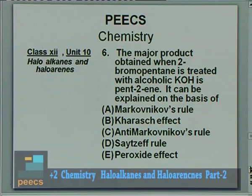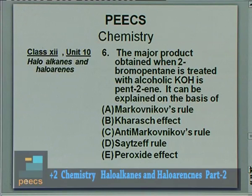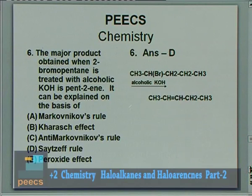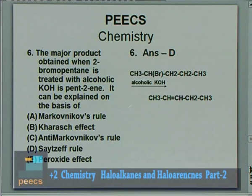Question 6: The major product obtained when 2-bromopentane is treated with alcoholic KOH is pent-2-ene. This can be explained on the basis of which rule? Options are Markovnikov's rule, Kharasch effect, anti-Markovnikov's rule, Saytzeff's rule, or peroxide effect. The correct answer is D — Saytzeff's rule. On the basis of Saytzeff's rule the major product is pent-2-ene.